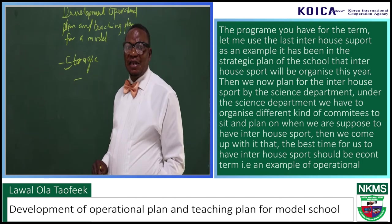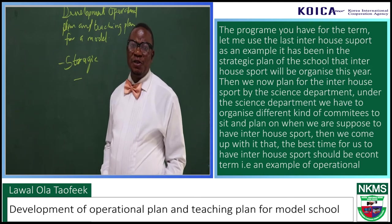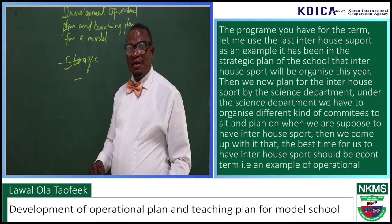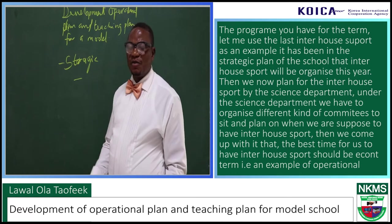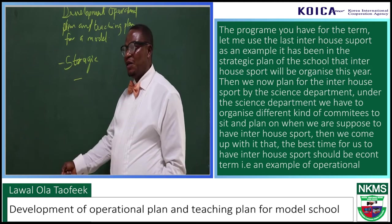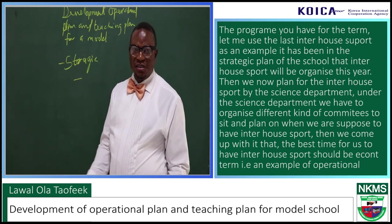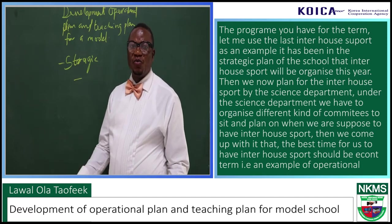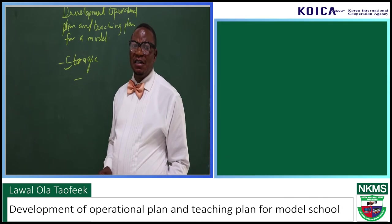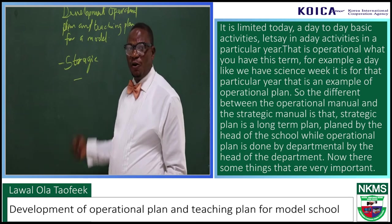Let me use the last inter-sport we did as an example. It has been in the strategic plan of the school that inter-sport will be organized this year. Then we planned for the inter-sport through the science department, organizing different committees to decide when we are supposed to have the inter-sport. We came up with the best time for us to have it. That is an example of operational plan.